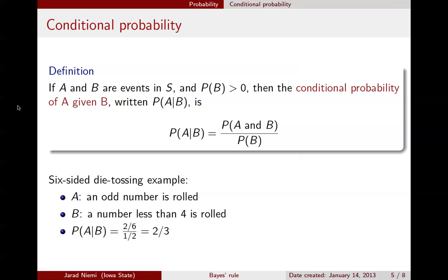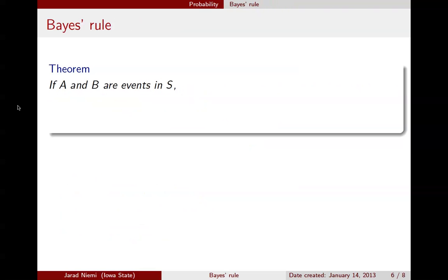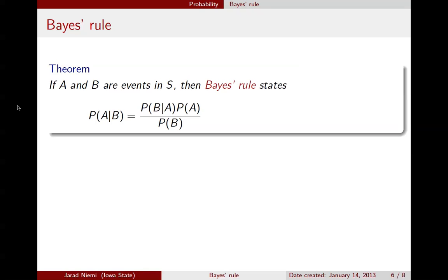That is it for definitions. Now comes Bayes' Rule. Bayes' Rule follows directly from the definitions given above, and therefore is a theorem. If A and B are events in S, then Bayes' Rule states that the probability of A given B is equal to the probability of B given A times the probability of A, divided by the probability of B. The only piece changed relative to the conditional probability definition is the numerator, which is derived directly from using the definition for conditional probability.